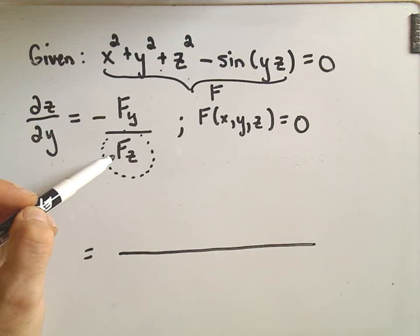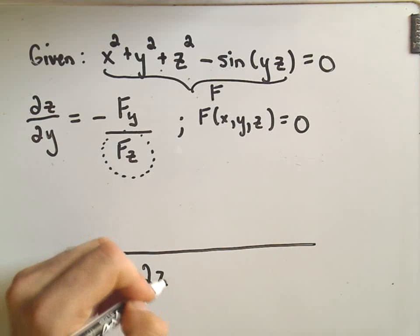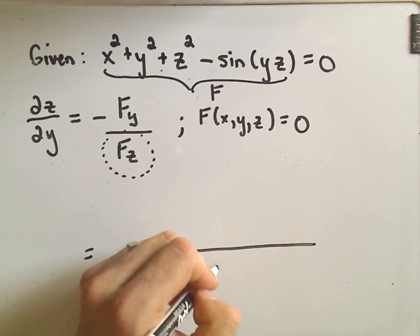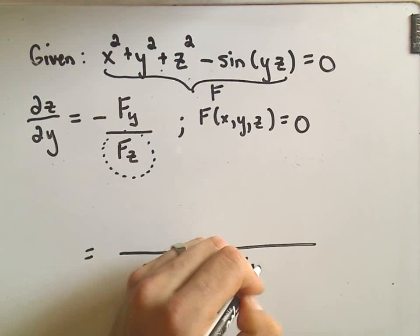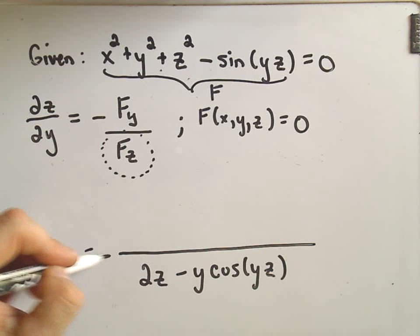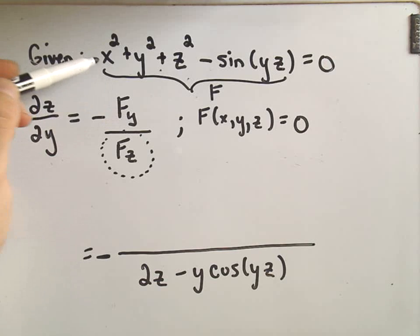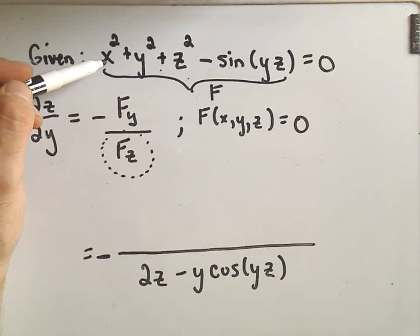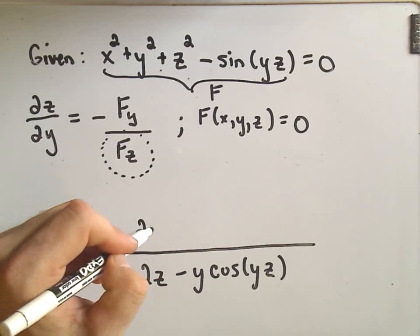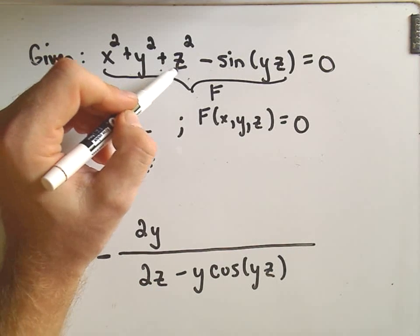So again, just to fill back in the denominator, we said the partial derivative with respect to z was 2z minus y cosine of yz. And if we figure out the other part, I almost left my negative out of there. If we take the partial derivative with respect to y, well, x squared will just turn into a zero. It's a constant. The derivative of y squared will be 2y. The derivative of z squared will turn into a zero.